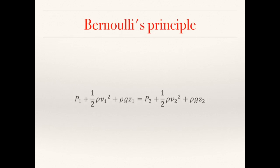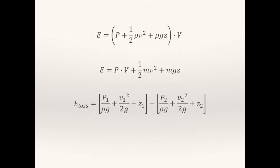This is indicated in Bernoulli's equation, where the pressure plus half the density times the velocity squared, plus the product of the density, gravity, and the height at one point in the fluid flow, is equal to that of a second point in the fluid. Since pressure is equivalent to the energy per unit volume, we can say that the energy of a fluid is the fluid pressure multiplied by the volume of the fluid. This means that the total energy is equal to the sum of the pressure times the volume of fluid, half the fluid mass times the velocity squared, and the mass multiplied by gravity and the height z. We can use this, along with Bernoulli's principle, to calculate the energy loss between two different points. The energy loss, or head loss, is a rearrangement of this formula.